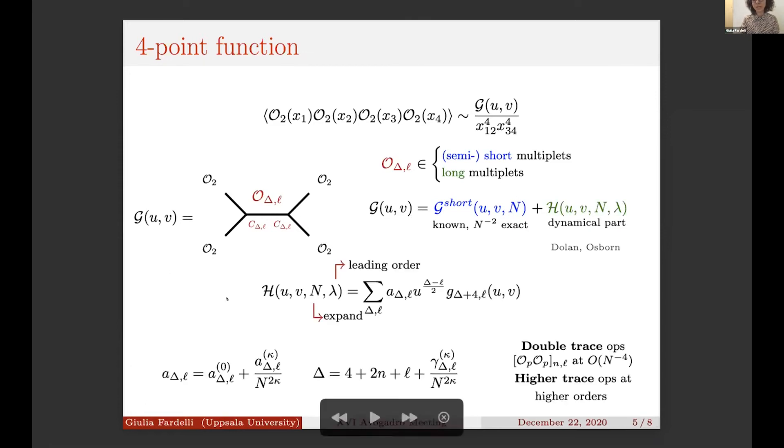This H can be written as a sum over some coefficient a, which is the square of the usual OPE coefficient c, and some superconformal blocks. We will stick to the leading order in λ, also called the supergravity limit, and we are expanding H in inverse powers of N through the expansion of this coefficient a and of the dimension of the exchange operators, which acquire anomalous dimension.